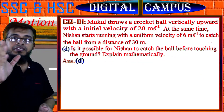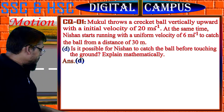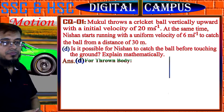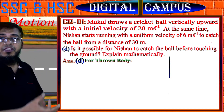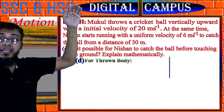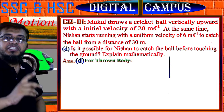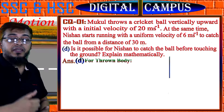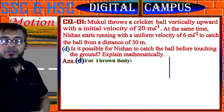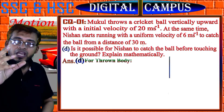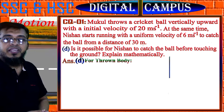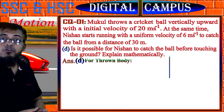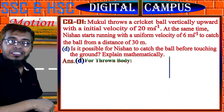Now I will solve question D: Is it possible for Nishan to catch the ball before it touches the ground? After throwing the ball, it will reach the maximum height and come back to the ground. Nishan will come from a distance of 30 meter. So we have to find the time of flight of the ball T, and also the required time for Nishan to reach the spot.